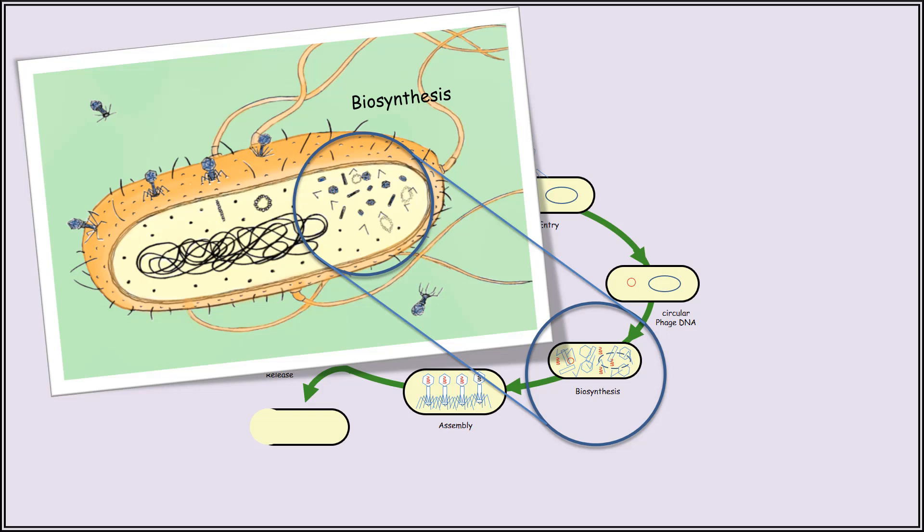The viral genes are transcribed by the host's RNA polymerase, and the host's ribosomes help translate this information to make bacteriophage capsid components. At the same time, the host's DNA polymerase uses the phage DNA as a template to make more copies of the phage genome. During this time, the host's resources — meaning its amino acids, nucleic acids, enzymes, energy, etc. — are mainly used to make more bacteriophage components.